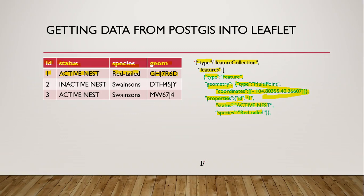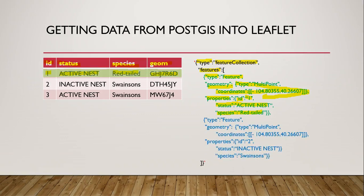This entire GeoJSON feature corresponds to the first row in the database. A second feature in the features array corresponds to the second row, and we could have a third corresponding to the third row. In theory there's no limit on how many rows we could have in our database table or how many features we could have in our GeoJSON data. These are really just two different representations of the exact same data.